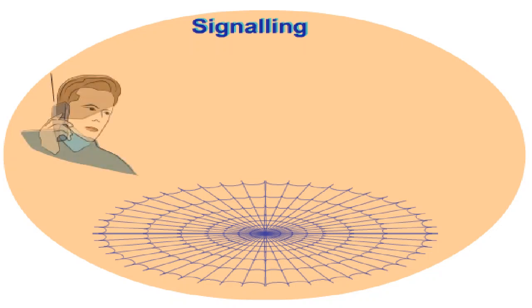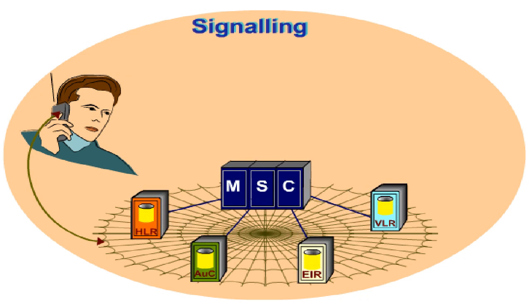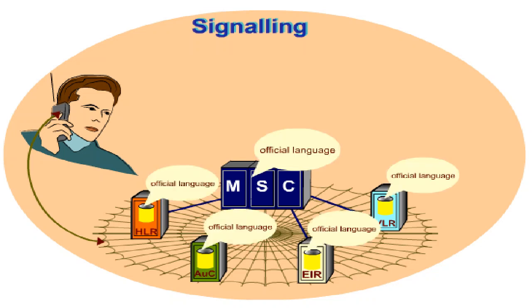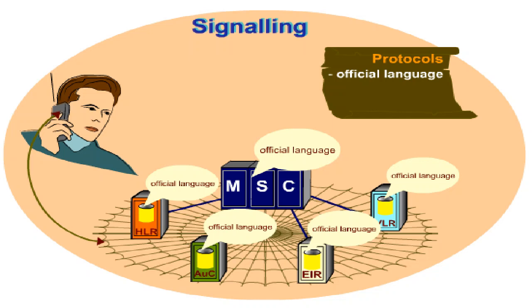To set up a call, signalling takes place between subscriber interface points — that is, between the user and the network, as well as between different network elements. To make sure that the individual elements through which the information travels can understand each other, they must agree on a common official language. This language is specified by protocols.